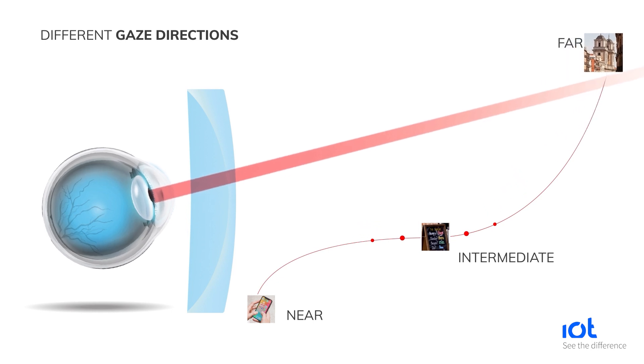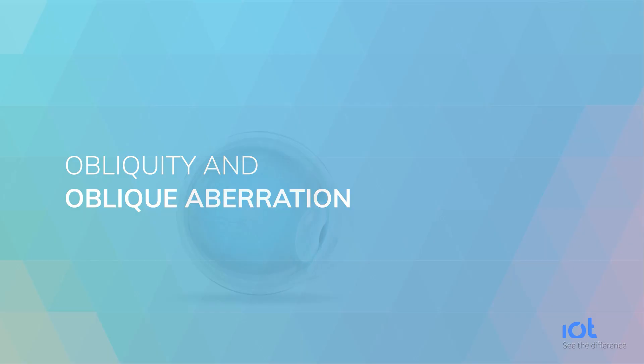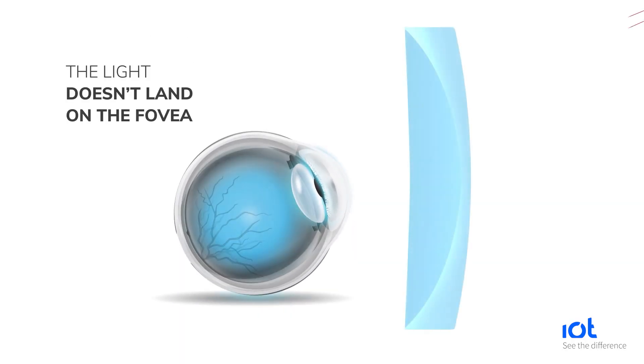What happens to the light path in real life? Obliquity changes everything. Light comes from different distances and angles and deviates from its original trajectory when passing through the lens, causing it to take new paths. As a result, all light does not land on the fovea. This leads to a significant drop in visual acuity. The patient is not perceiving his prescribed power.